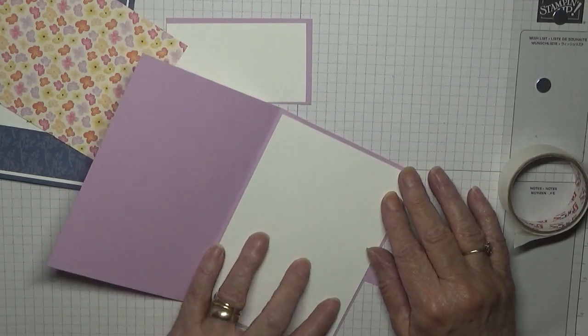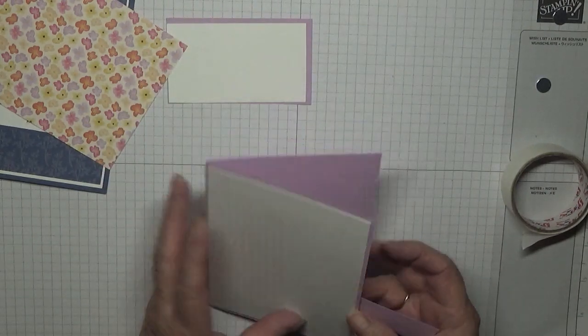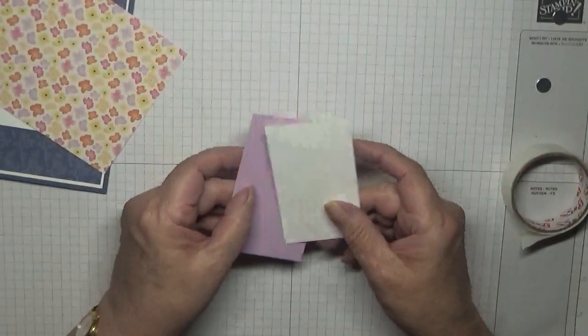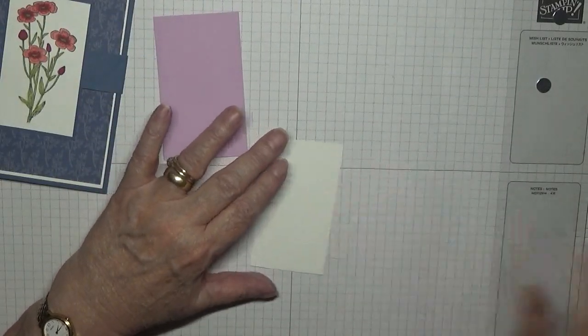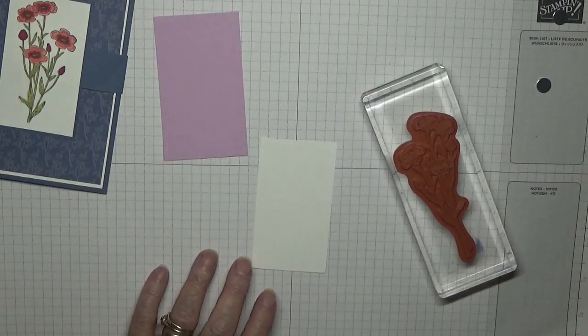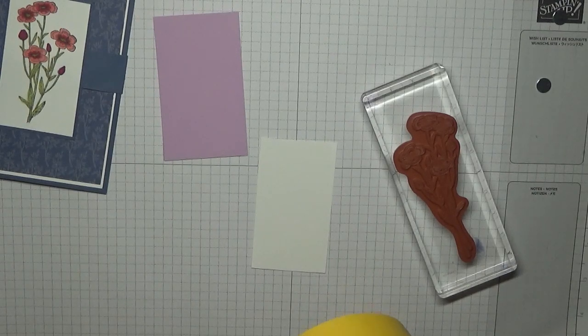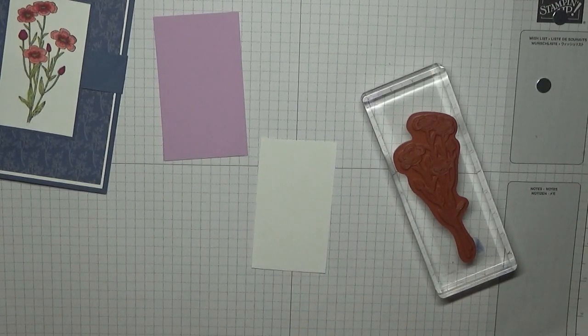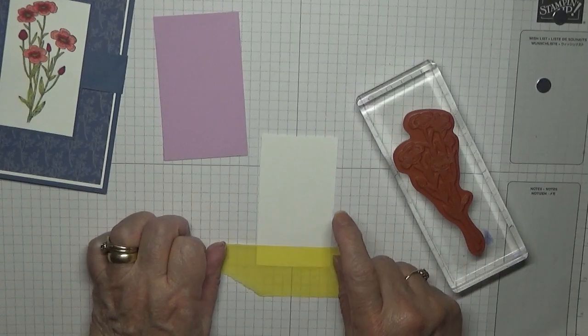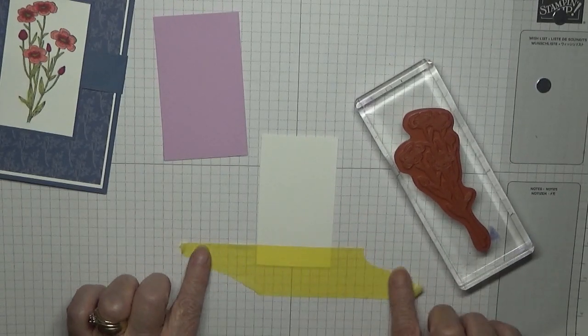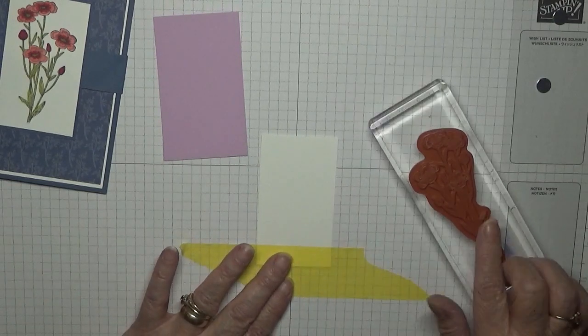That will fold over. So let's do our stamping first. I have my flower here. I need a little bit of my masking tape because I'm going to mask off the bottom of this because I don't want all the flower on the bottom.